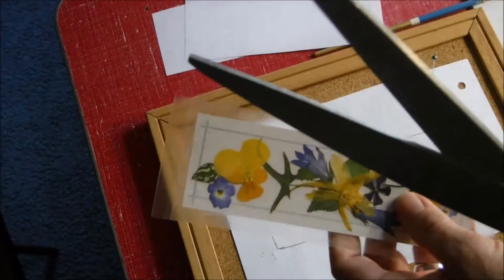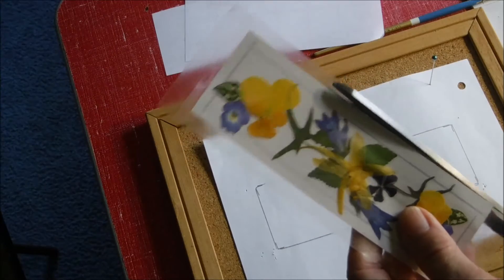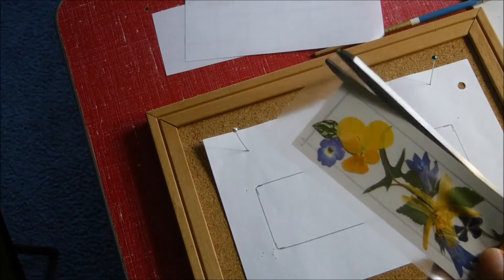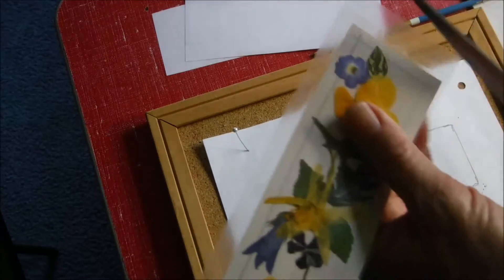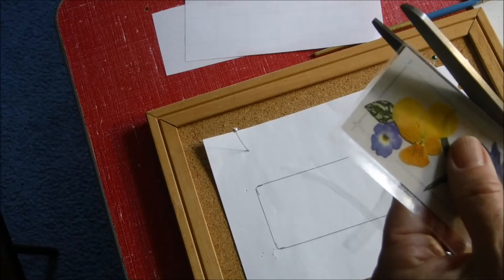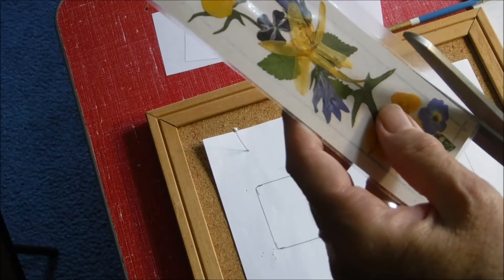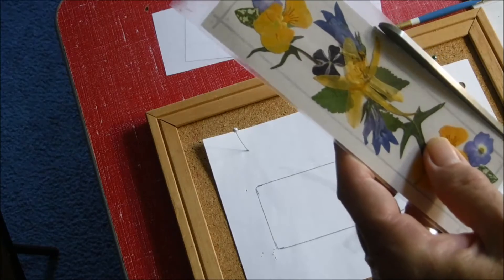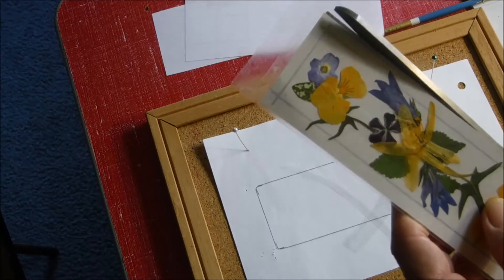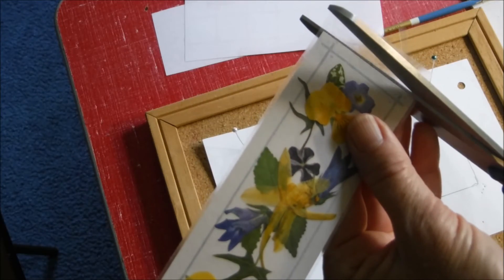The next step is to trim it. Don't trim flush with the bookmark. You want to leave the smallest fraction of the laminate touching each other so that it doesn't open up and let air get to the flowers. So you can see I'm leaving a small border around the edges and this keeps it intact.